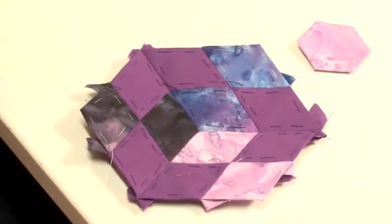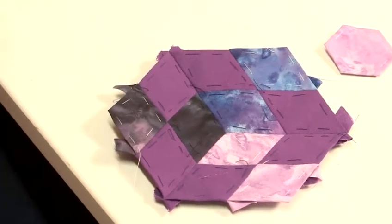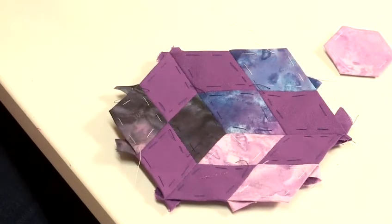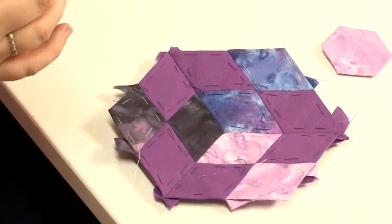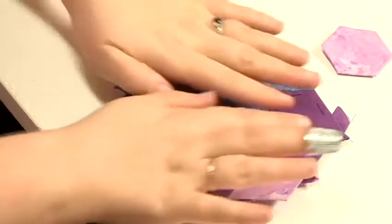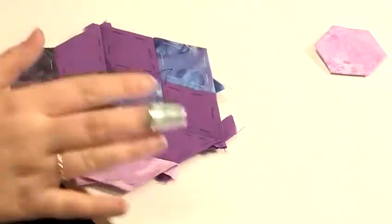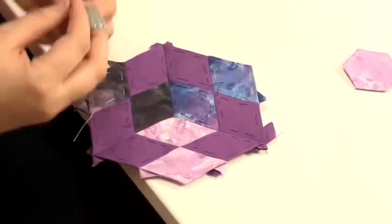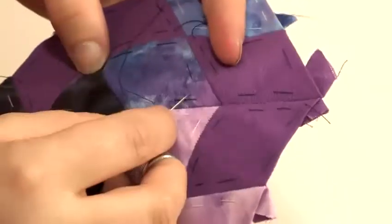So I've finished piecing this block. And because I'm going to be joining it with a lot of others, it will start to get quite unmanageable if I leave the papers in. So to remove the papers, leave the ones around the edges. You still need the nice sharp edge. And you want to remove the tacking stitches of the ones in the middle.